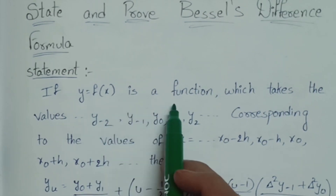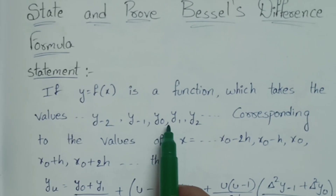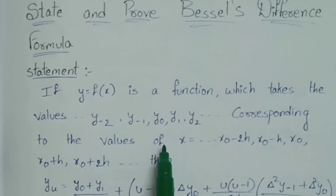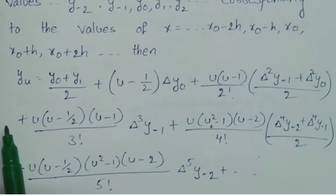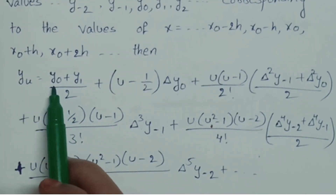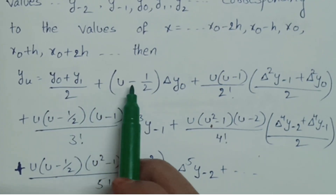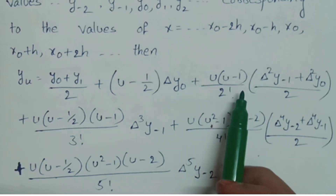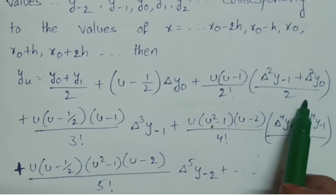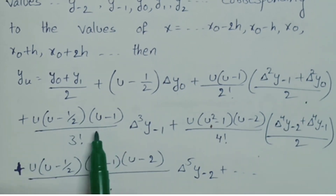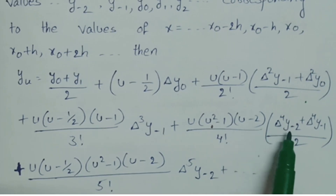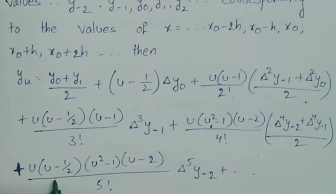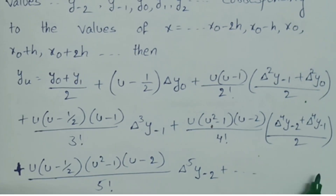The statement is: if y equal to f(x) is a function which takes the values y minus 2, y minus 1, y naught, y1, y2 and so on, corresponding to the values of x equal to x0 minus 2h, x0 minus h, x0, x0 plus h, x0 plus 2h and so on. Then Bessel's formula: y(u) equals (y0 plus y1)/2 plus (u minus 1/2) delta y0 plus u(u minus 1)/2! times (delta squared y minus 1 plus delta squared y0)/2 plus u(u minus 1)(u plus 1)/4! times (delta to the 4th y minus 2 plus delta to the 4th y minus 1)/2 plus u(u minus 1)(u squared minus 1)(u minus 2)/5! delta to the 5th y minus 2 and so on.